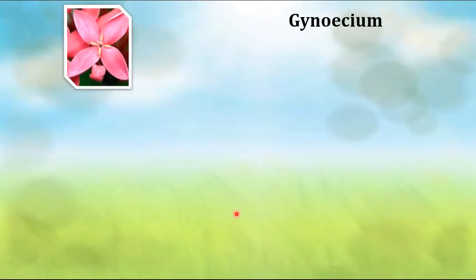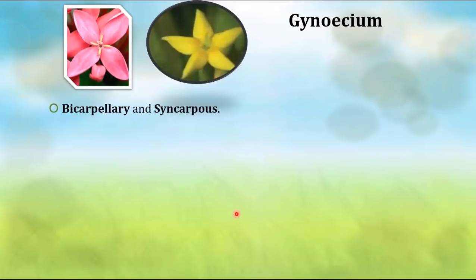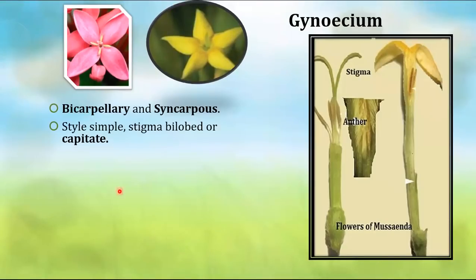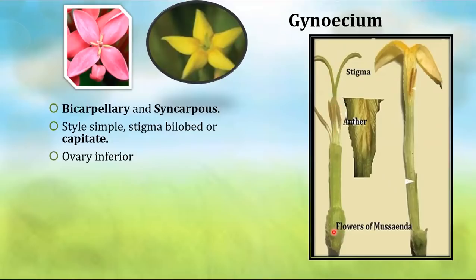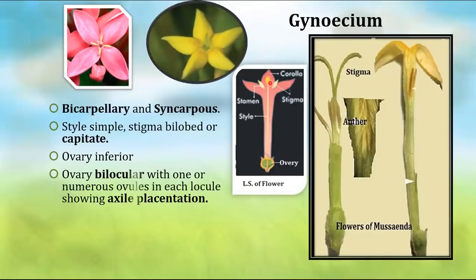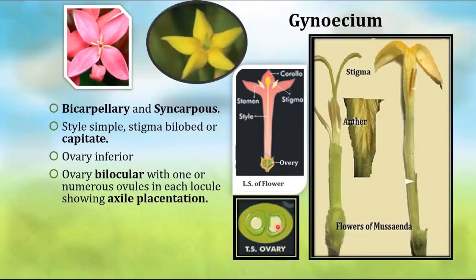The gynoecium is the female reproductive part. It shows bicarpellary and syncarpous condition — two carpels fused together. The style is simple. The stigma is bilobed or capitate type. The ovary is inferior — sepal, petal, and androecium are above the ovary. The ovary is bilocular with one ovule in each locule, showing axile placentation. In Gardenia, there are five carpels also syncarpous.